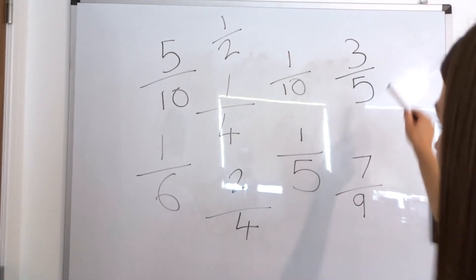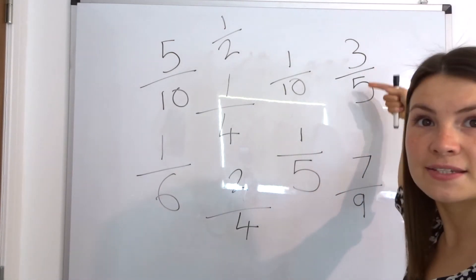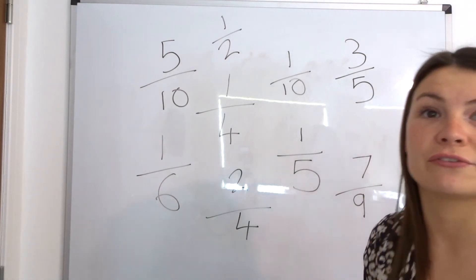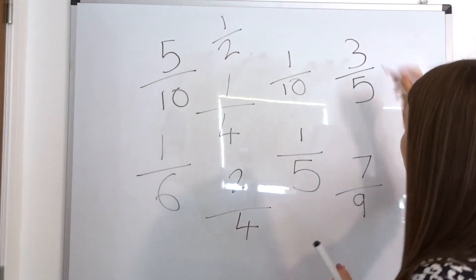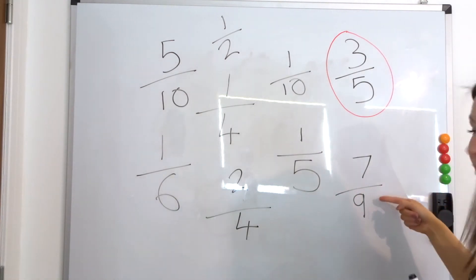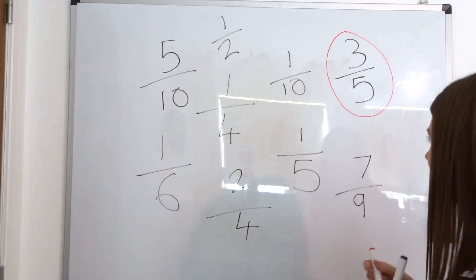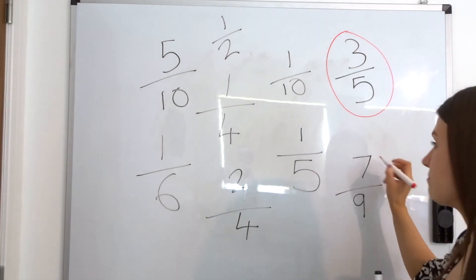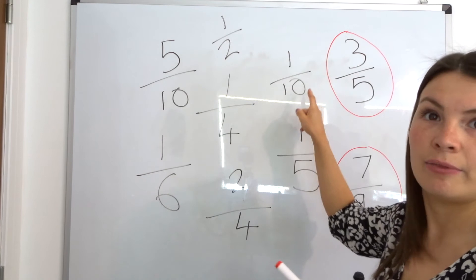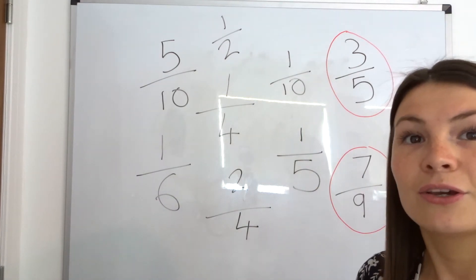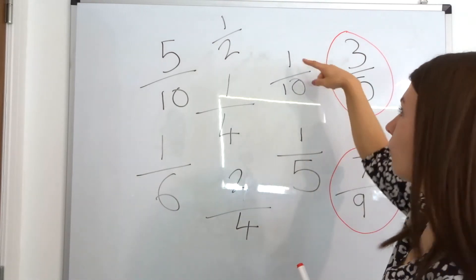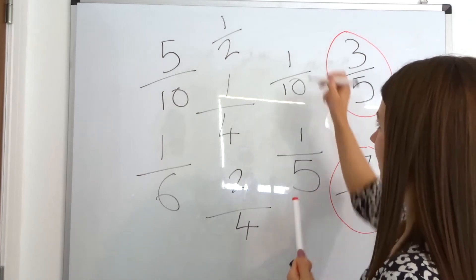Let's go through this. Starting in the top corner: three fifths - is that a unit fraction or a non-unit fraction? Good - a non-unit fraction, so I'm going to circle it with my red pen. What about seven ninths? Good - it is a non-unit fraction because the numerator is bigger than one; there are seven parts of nine pieces. One tenth - is that a unit fraction or a non-unit fraction? Good - it's a unit fraction because we've only got one on the top, one part of ten pieces.